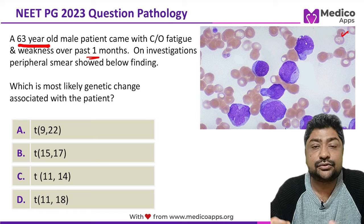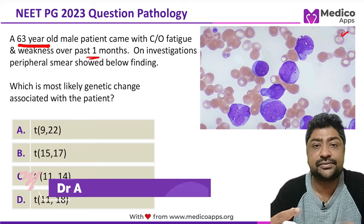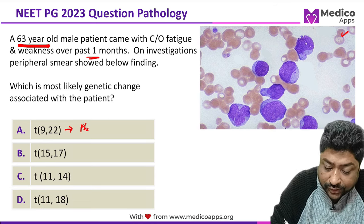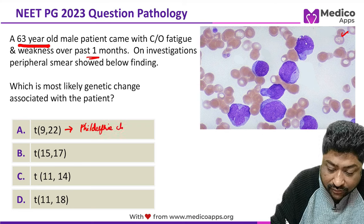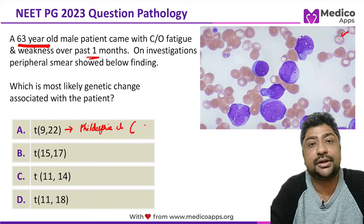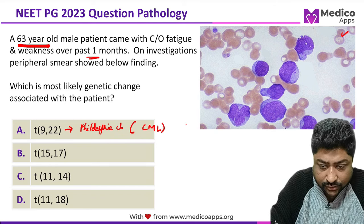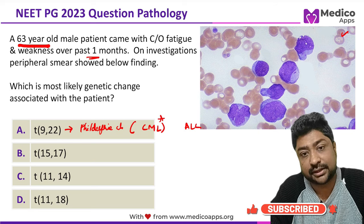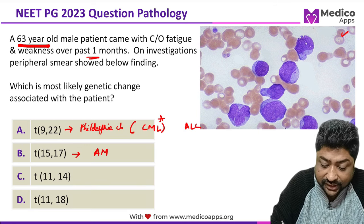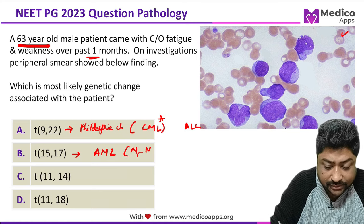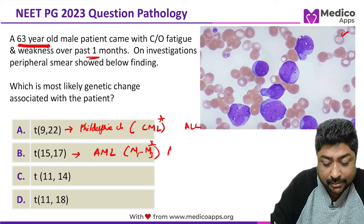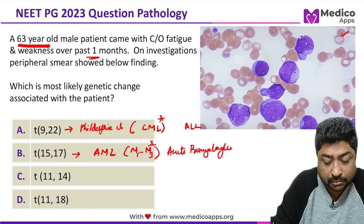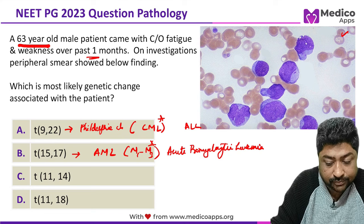Let's look at what each of these genetic changes implies. Translocation T9;22 refers to the Philadelphia chromosome, primarily seen in CML and sometimes in ALL. Translocation 15;17 is seen in AML, from M1 to M3, but primarily in M3 — acute promyelocytic leukemia.